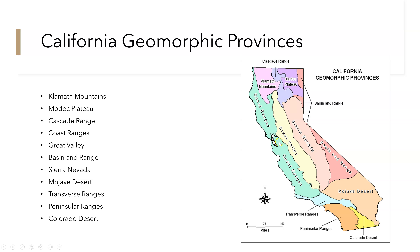Here are the California provinces again: the Klamath Mountains, Modoc Plateau, Cascade Range, Coast Ranges, Great Valley, Basin and Range — which is what we'll focus on — the Sierra Nevada, Mojave Desert, Transverse Ranges, Peninsular Ranges, and the Colorado Desert.